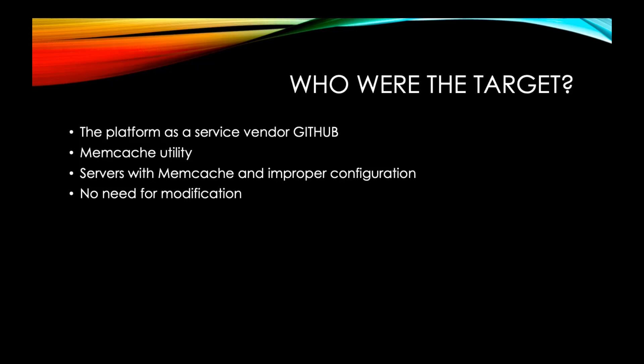Who was the target? The target of the incident was Platform as a Service vendor GitHub, who are running servers under various operating systems. Given that memcache is a utility available to both Linux and Windows operating systems, it should be noted that if memcache is installed, proper configuration must be put in place — for example, making sure that the accepted IP address range is identified and properly limited, and disabling UDP support if UDP is not actively being used.